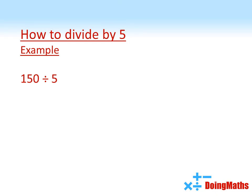So for example, 150 divided by 5. First of all, divide by 10, that gives you 15. Multiply that by 2 to give us an answer of 30.